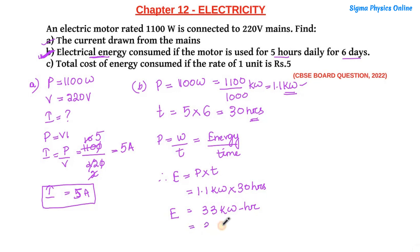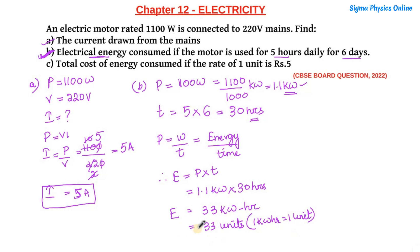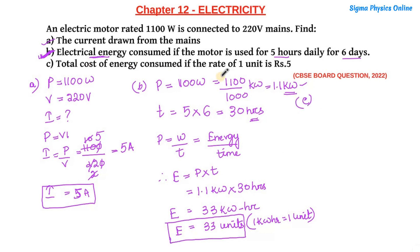The energy consumed is 33 kilowatt-hours, which equals 33 units, because 1 kilowatt-hour equals 1 unit of electrical energy. So the electrical energy consumed is 33 units. This is your second part answer.